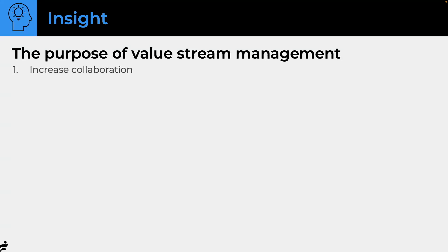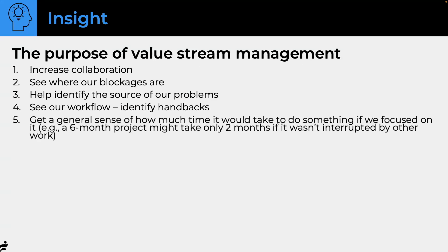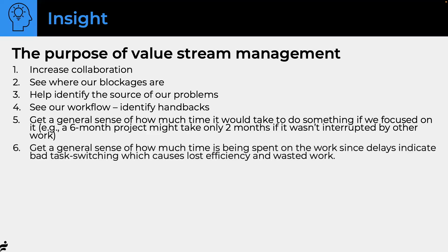Value stream management has gotten in vogue and there are a lot of good reasons for it. It can increase collaboration, show where our blockages are, help identify the source of our problems, see our workflow, and identify handbacks — where you give something to somebody and they hand it back to you. It gives a general sense of how much time it would take to do something if we focused on it. A lot of six-month projects might have only taken one or two months if not interrupted by other work.